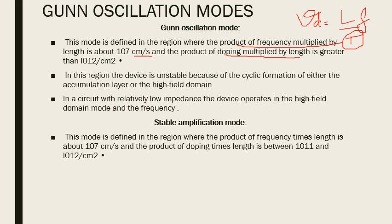When the device operates with doping times length greater than 10 raised to 12 per centimeter squared, the device is unstable because a continuously high field domain is created; it operates at relatively low impedance. In the stable amplification mode, the product of frequency times length is about 10 raised to 7, and the doping times length is between 10 raised to 11 and 10 raised to 12 — notice this is between two values, unlike the previous mode which was greater than.